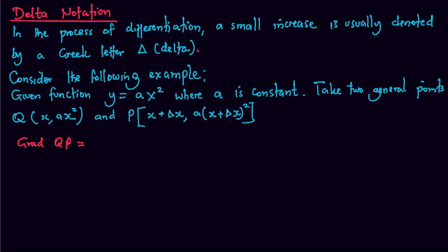Consider the following example. Given a function y equals ax squared where a is constant, we take two general points Q and P on the curve which will look like this.